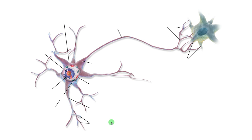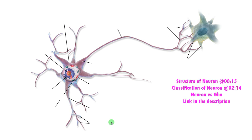In this video, let us understand the classification of neurons based on structure. Neurons are the basic structural and functional unit of the nervous system, responsible for receiving, processing, and transmitting information throughout the body. Neurons are made up of three main parts.